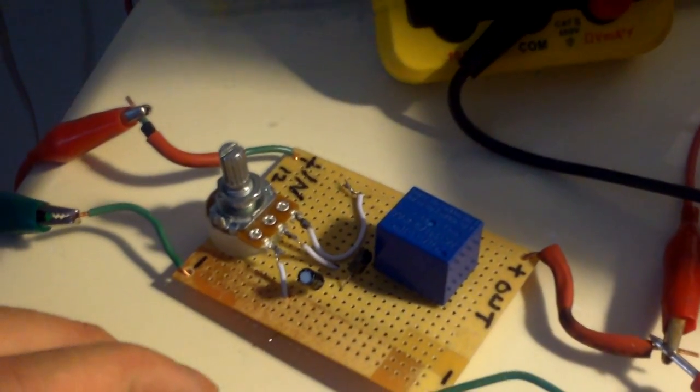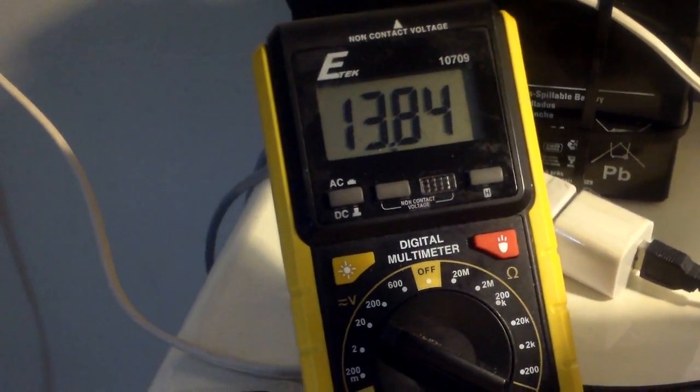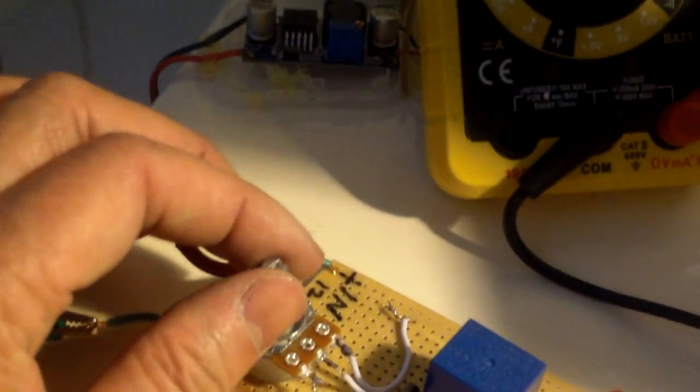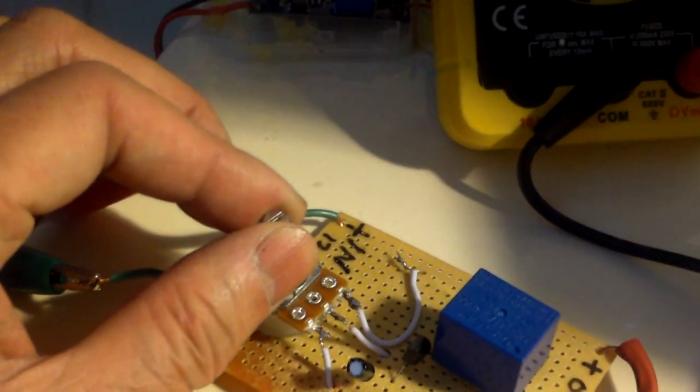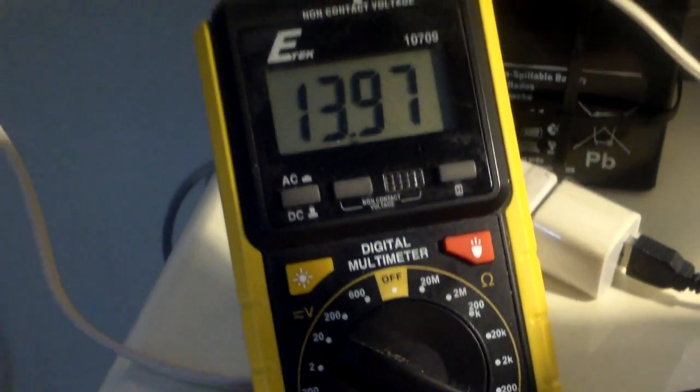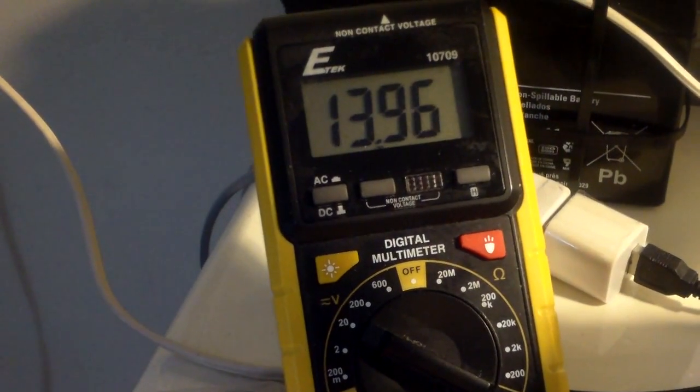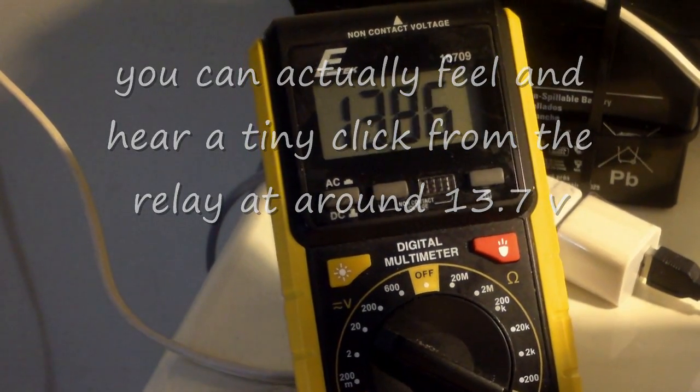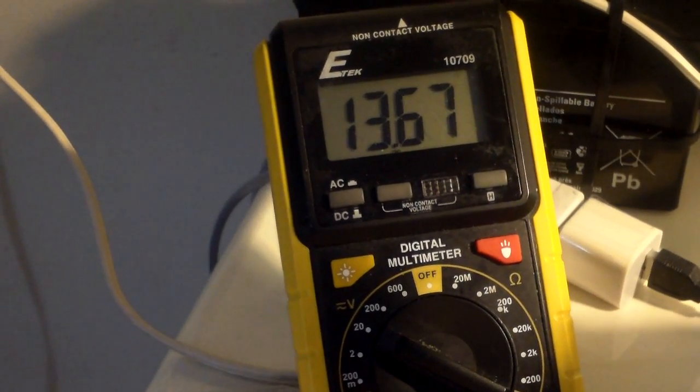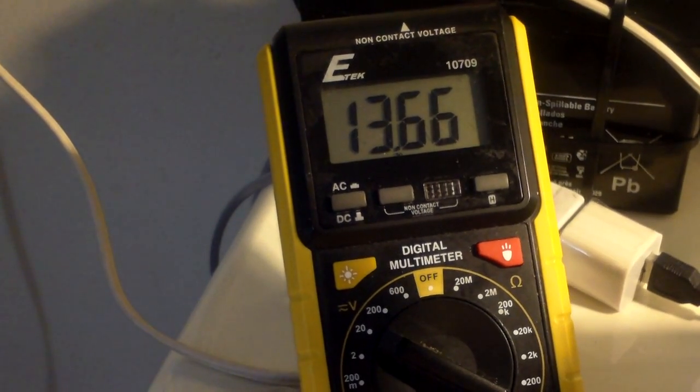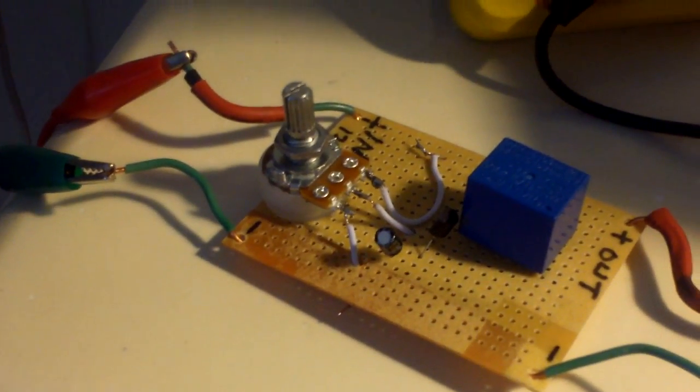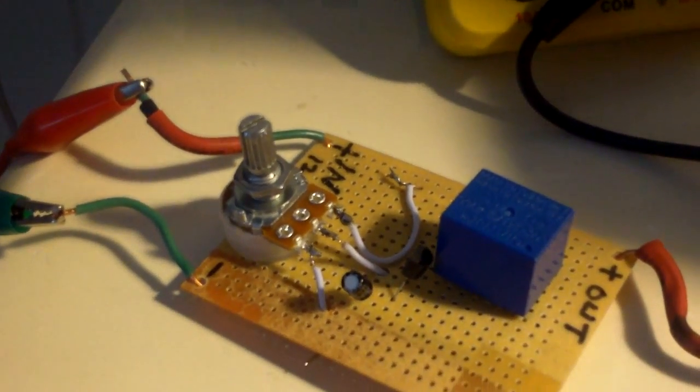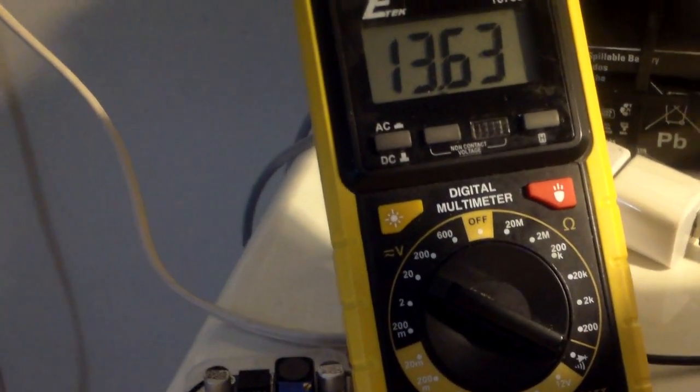So here's the automatic charger. The voltage of the battery is supposed to cut out at 13.7 volt. When I turn this counterclockwise, voltage goes out, turn this clockwise, and at about 13.7 volt, the relay clicks in, and the cut in rate is about 11.5 volt. So when the voltage drops to 11.5 volt, charging will begin again until it goes up to 13.7 volt.